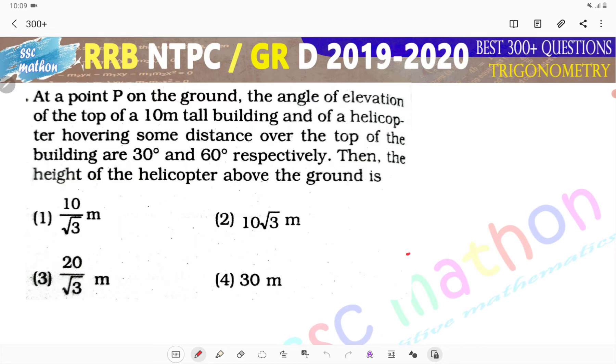What did I say? In one place, there is a 10 meter tall building. The angle of elevation is 30 degrees, and the helicopter angle of elevation is 60 degrees.